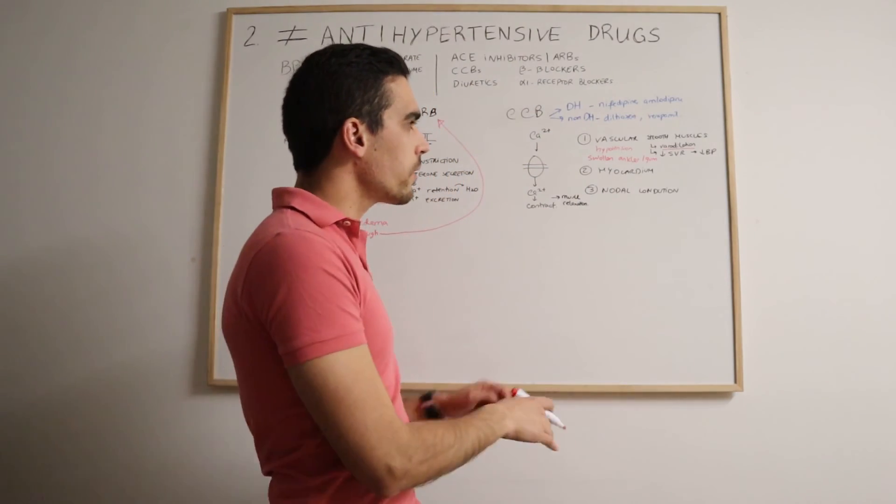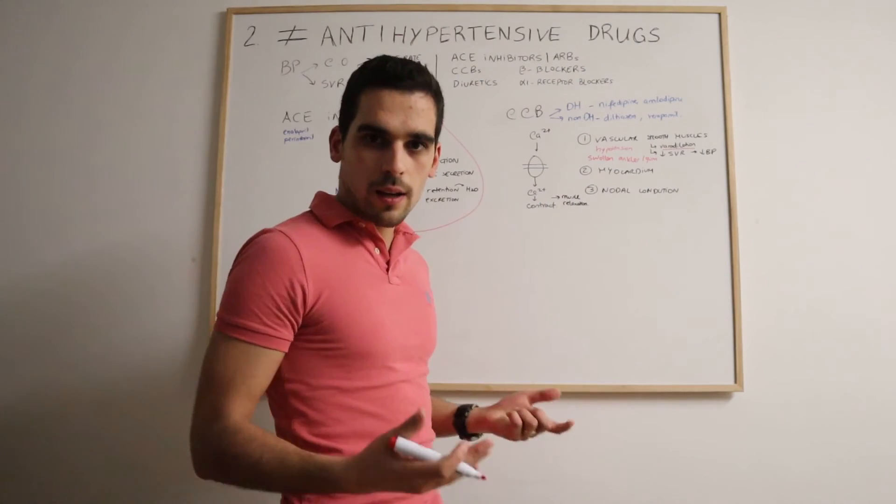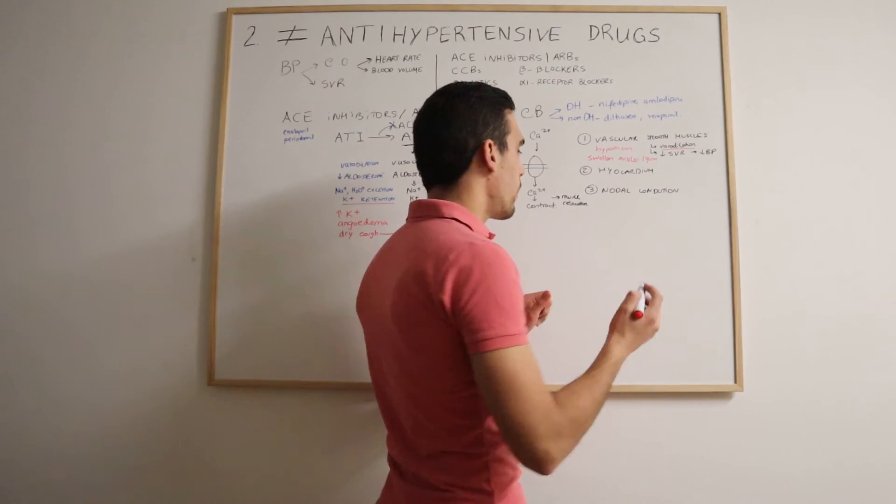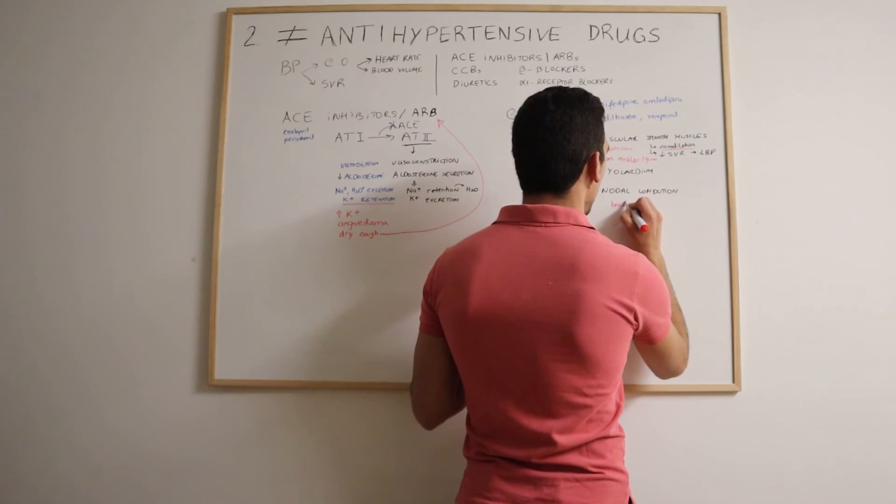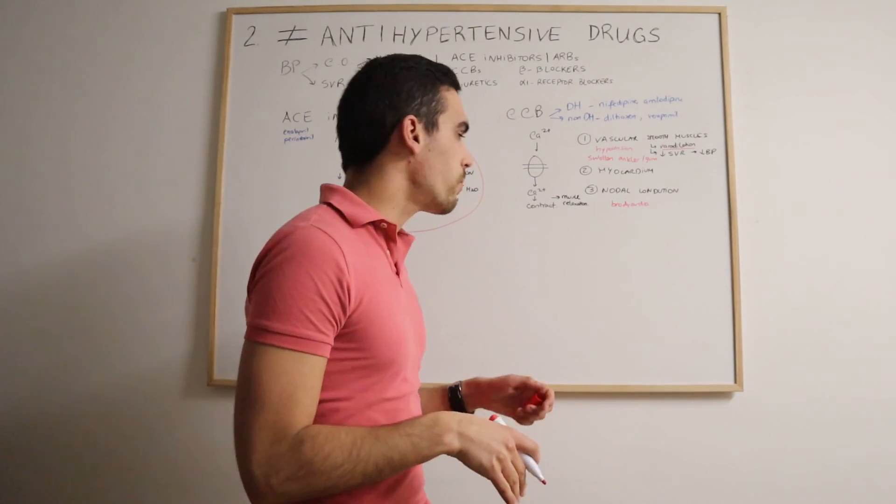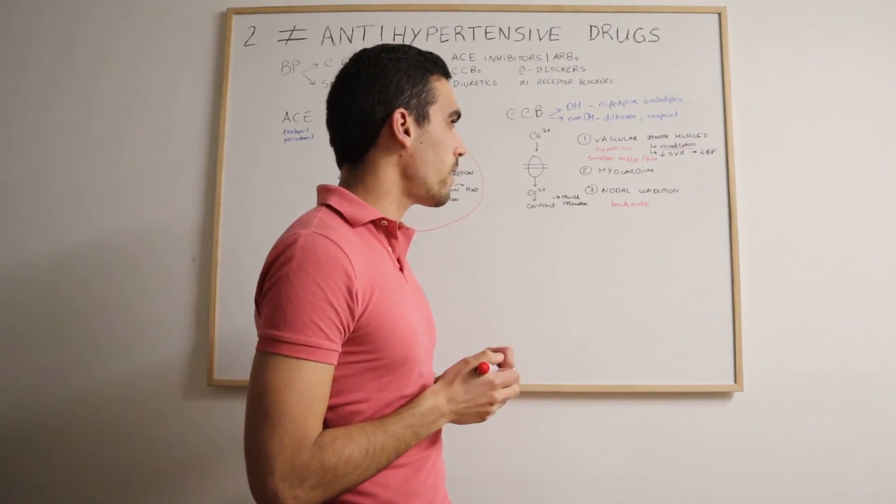Then, when it comes to diltiazem and verapamil that act mainly on the heart system, basically, the main side effect is bradycardia. The heart rate may drop too much. That's pretty much the main side effect.